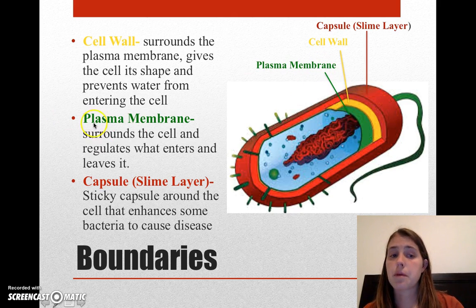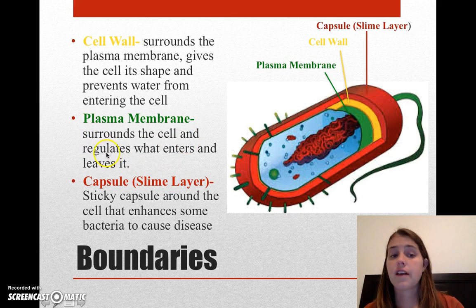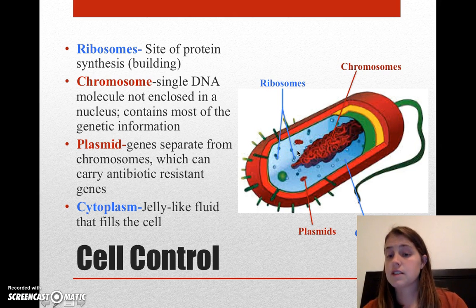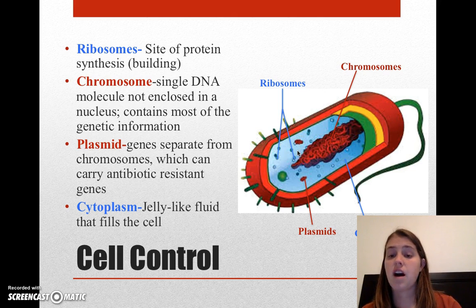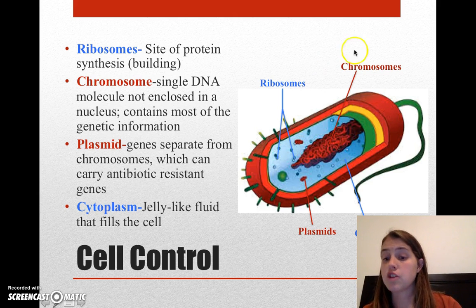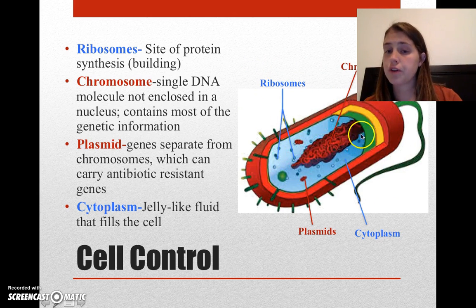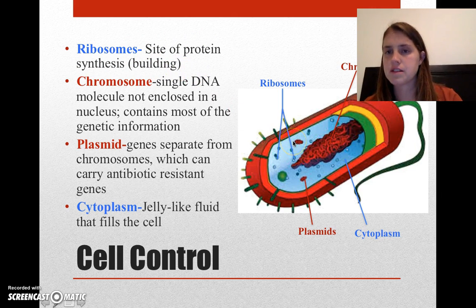Inside the cell wall, we have our plasma membrane, which does exactly the same thing as in eukaryotic organisms — it surrounds the cell and controls what can go in and what can go out. We also have ribosomes, which do the exact same thing as in eukaryotic cells. In eukaryotic cells, ribosomes can be free-floating in the cytoplasm or bound to the endoplasmic reticulum, making rough ER. In prokaryotic cells, they're all free-floating in the cytoplasm. Ribosomes are the site of protein synthesis — that's where proteins are made.